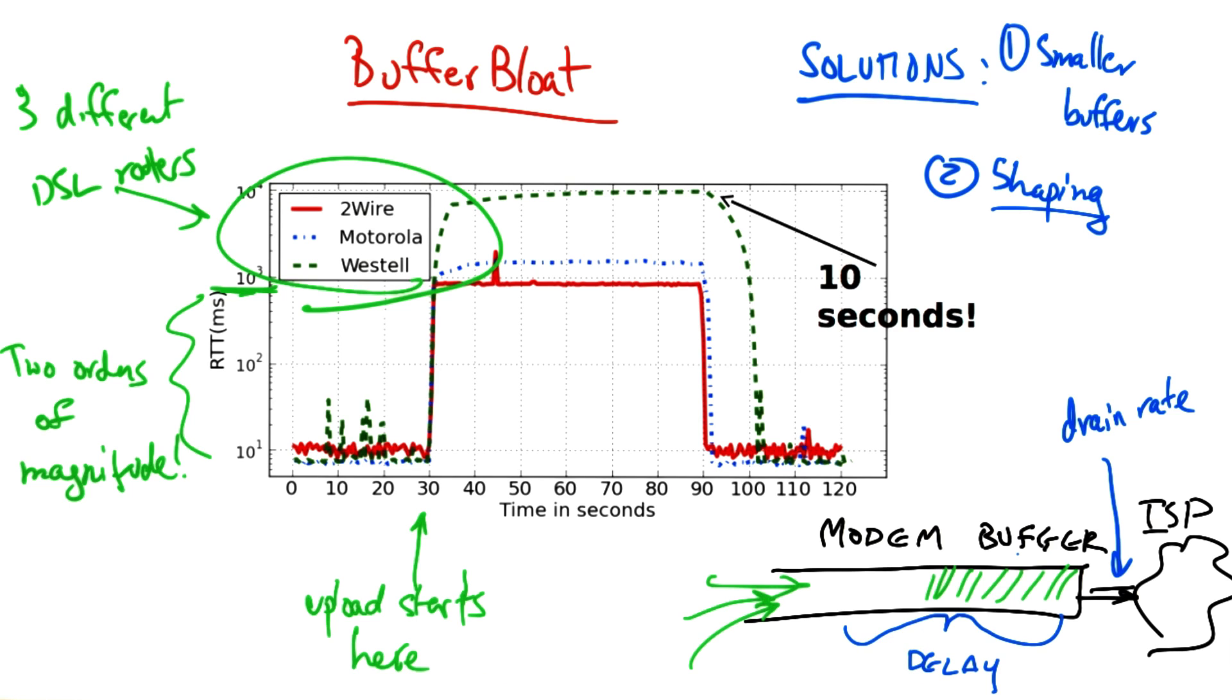Thus, by shaping traffic at the home router, such that the rate that traffic is sent to the ISP never exceeds the rate of the uplink, the modem buffer will never actually fill up.